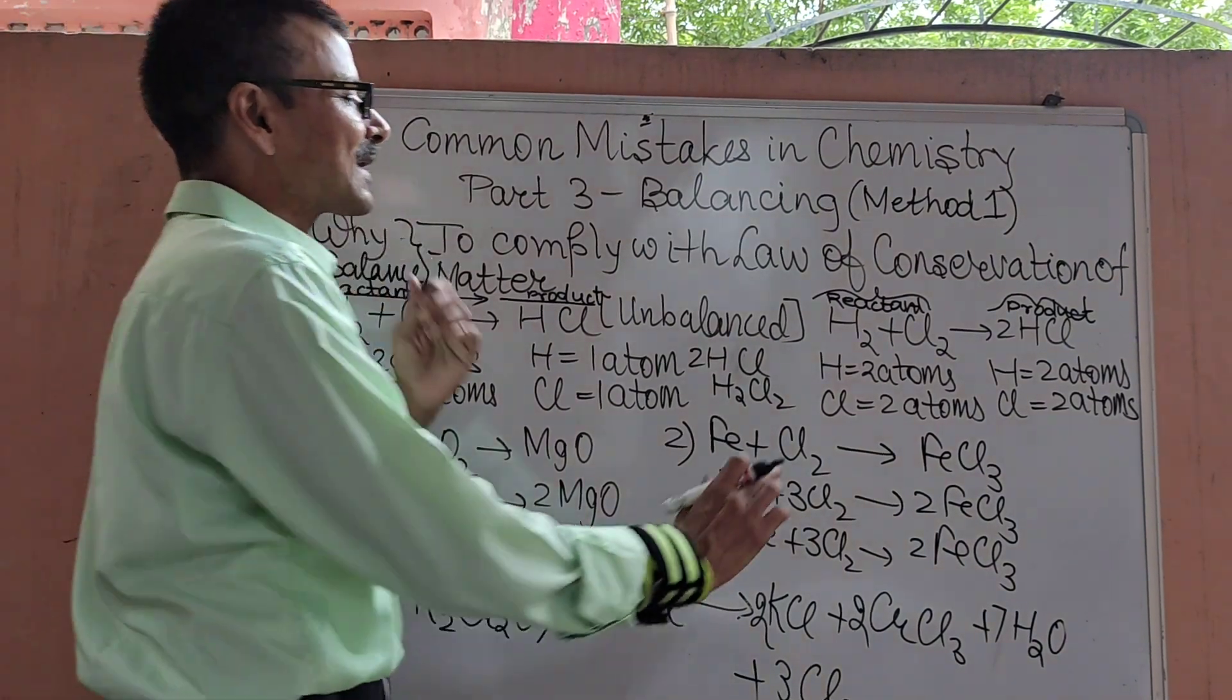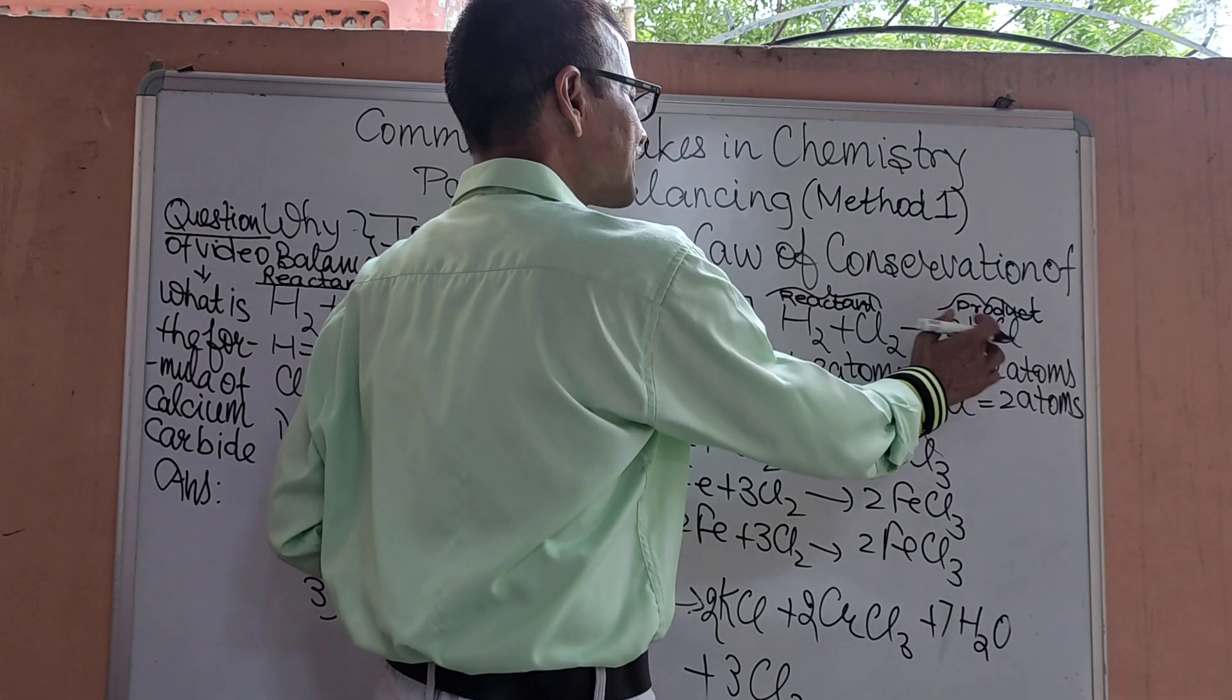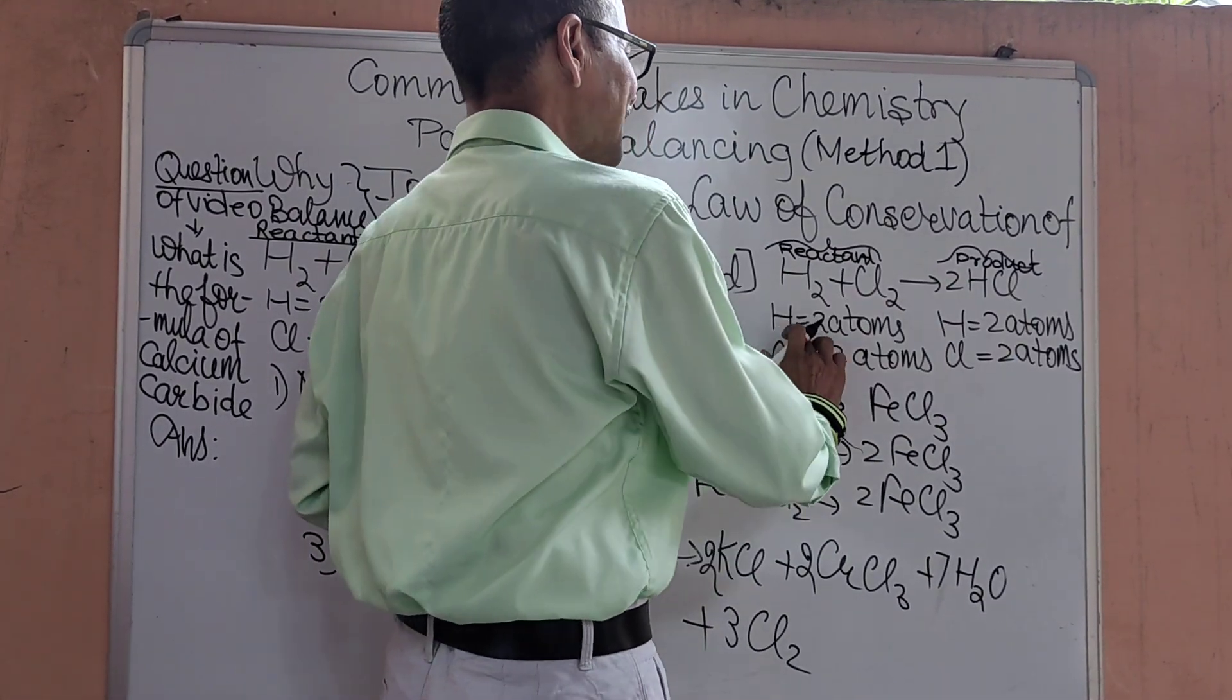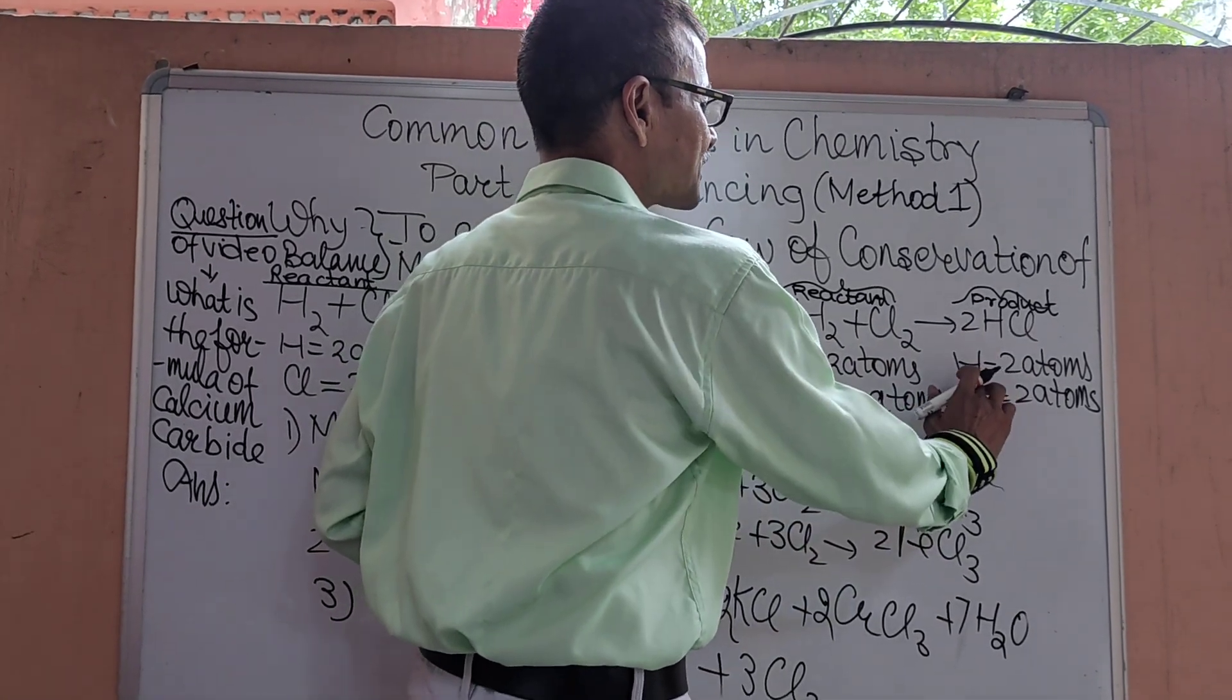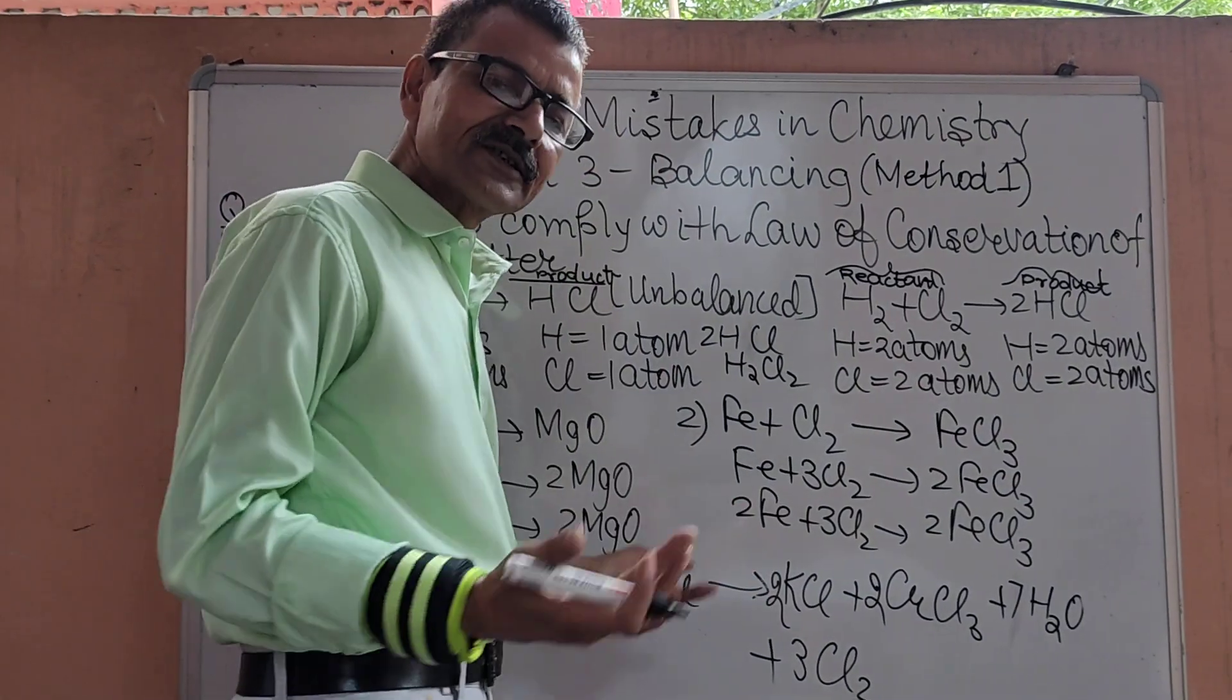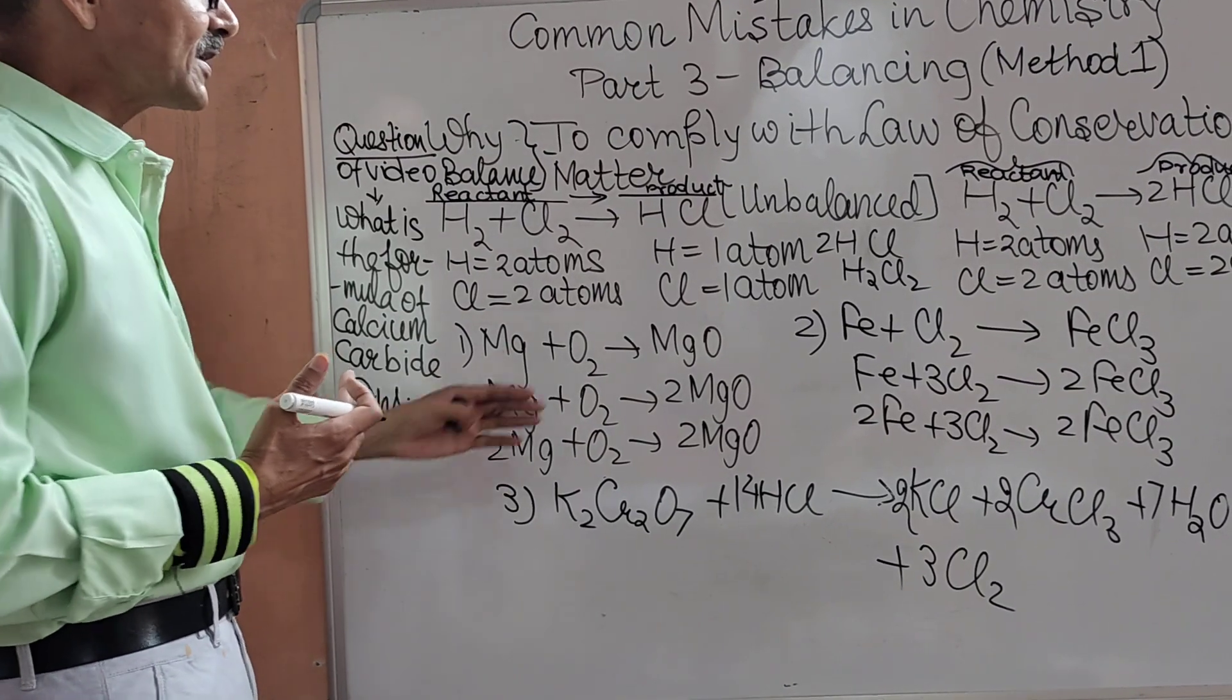This can simply be balanced by multiplying the HCl by 2. Now here if you look, H2 plus Cl2 giving you 2 HCl, hydrogen in the reactant is 2 atoms, chlorine 2 atoms, but in the product hydrogen is 2 atoms and chlorine is also 2 atoms, means the reaction is balanced. To understand it better, let's take a few examples.